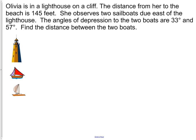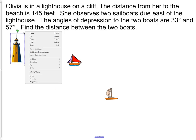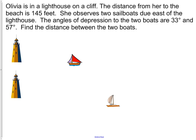One more question here. Olivia is in a lighthouse on a cliff. The distance from her to the beach is 145 feet. She observes two sailboats due east, which means directly to the east of her. The angles of depression to the two boats are 33 and 57 degrees. Find the distance between the two boats. So we have boat number one and boat number two. Just for ease of use, we're going to make two lighthouses. First off, remember, the lighthouse is 145 feet. It's not going to change. She observed two sailboats to the east, one of them at 57 degrees and one of them at 33 degrees.